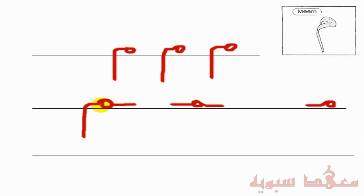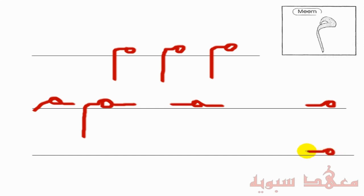Now, there are other forms of this. You don't need to go that far down — it could be shorter, for example. To join three Meems together, it's as follows: one, two, and then three. That's quite straightforward.